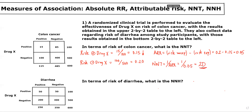The interpretation is: for every 20 people who received drug X rather than placebo, one additional patient will not have colon cancer. Drug X was beneficial in this case, so we calculated an absolute risk reduction and an associated number needed to treat.